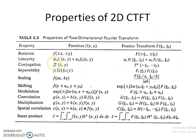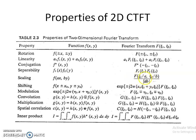The linearity property states that a₁·f₁(x, y) + a₂·f₂(x, y) will have a Fourier transform of a₁·F₁(ζ₁, ζ₂) + a₂·F₂(ζ₁, ζ₂), following both homogeneity and superposition. The conjugation property says f*(x, y) has a Fourier transform of F*(−ζ₁, −ζ₂). The separability property — whose proof we have already seen — states that f₁(x)·f₂(y) has a Fourier transform of F₁(ζ₁)·F₂(ζ₂). The scaling property says f(ax, by) has a Fourier transform of (1/|ab|)·F(ζ₁/a, ζ₂/b).